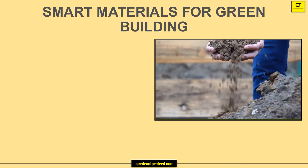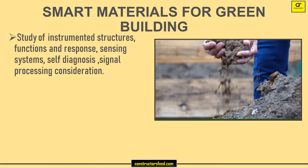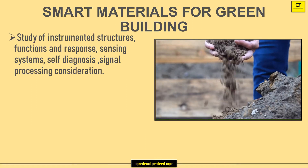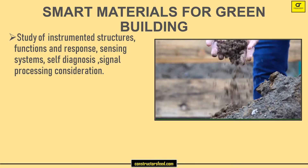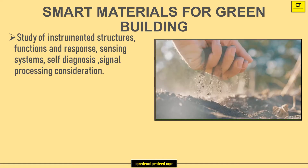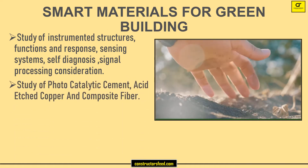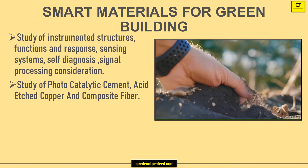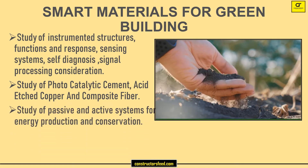Smart Materials for Green Building covers Study of Instrumented Structures, Functions and Response Sensing Systems, Self-Diagnosis, Signal Processing Consideration, Study of Photocatalytic Cement, Acid Etched Copper and Composite Fiber, and Study of Passive and Active Systems for Energy Production and Conservation.